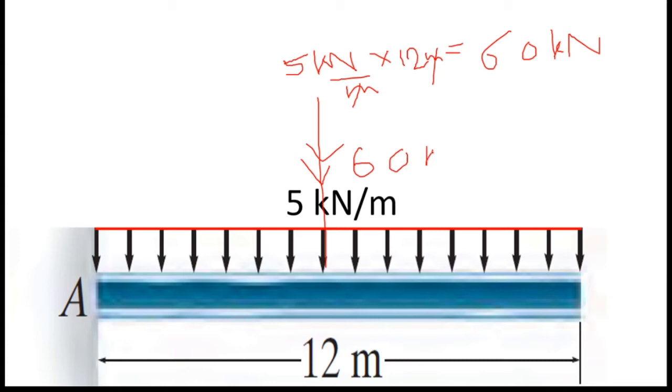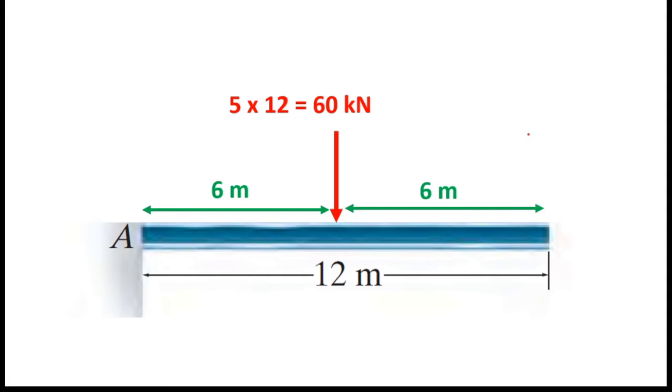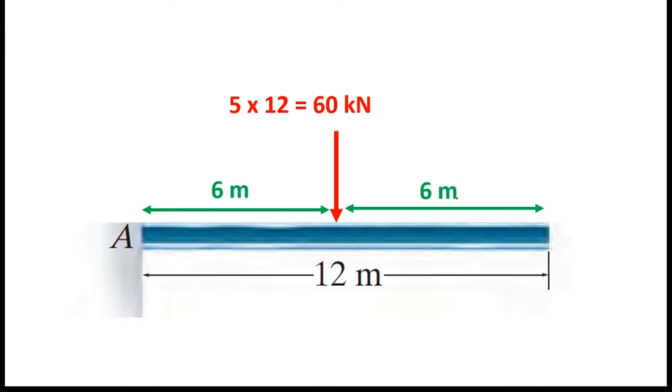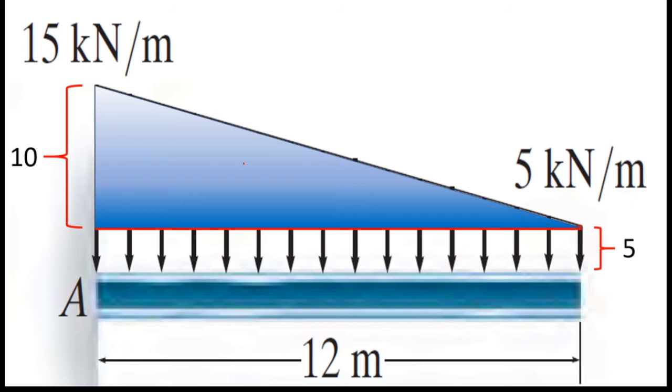When I have a new distribution load, I would like to use this distribution load. When you look at the distribution, it becomes triangular. The centroid for a triangle is at one-third.